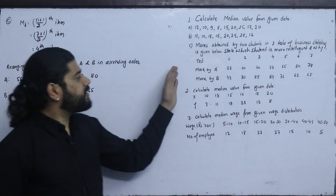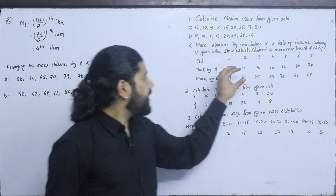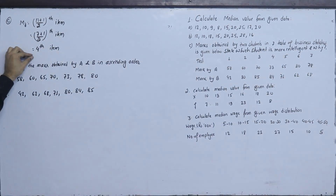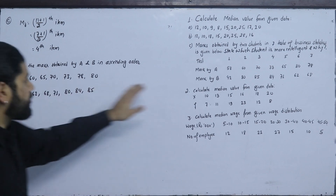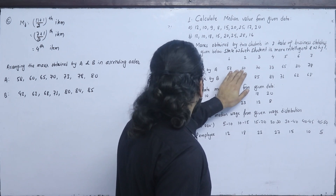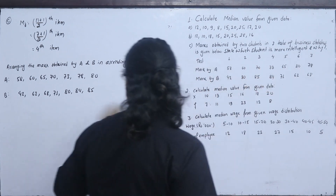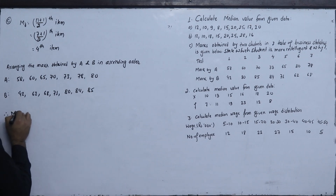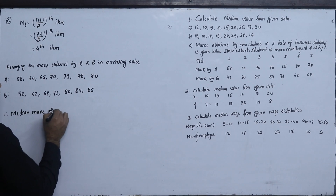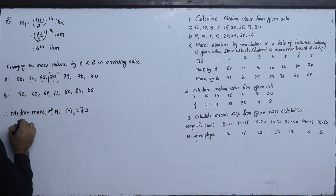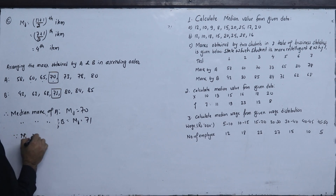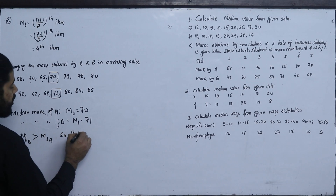For individual series, the formula is (n+1)/2 = (7+1)/2 = 4th item. We arrange the marks for A: 58, 60, 65, 70, 73, 78, 80. The 4th item is 70. For B, arranging similarly, the 4th item is 71. Since the median marks of B (71) are greater than the median marks of A (70), B is more intelligent.